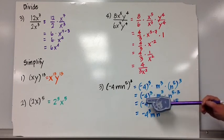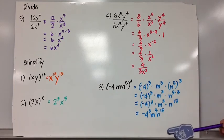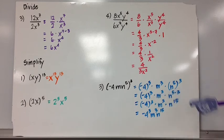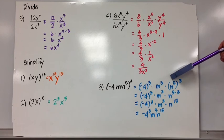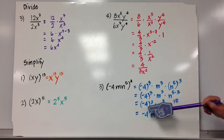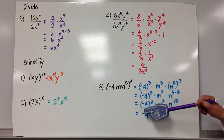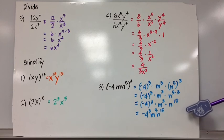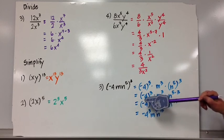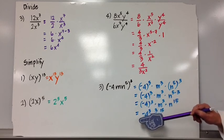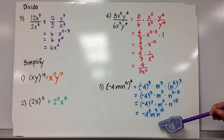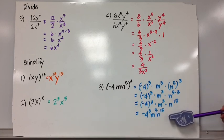Negative 4 to the 3rd power, m cubed, and n to the 5 times 3 — because this is a power to a power, we multiply those exponents, giving n to the 15th. So negative 4 to the 3rd power times m cubed times n to the 15th. Negative 4 cubed simplifies, giving us our final simplified form: negative 64 times m cubed times n to the 15th.